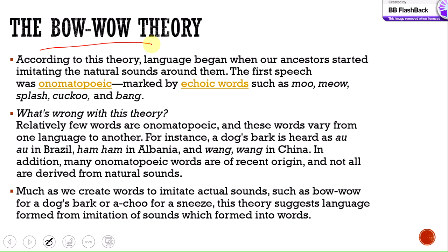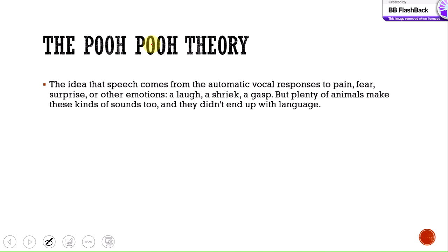The Pooh-pooh Theory says that speech comes from the automatic vocal responses to pain, fear, surprise, or other emotions. Language was started with sounds made in moments of pain, fear, or surprise — a laugh, a shriek, a gasp. But plenty of animals make these kinds of sounds too, and they did not end up with language. So how can this theory be verified?